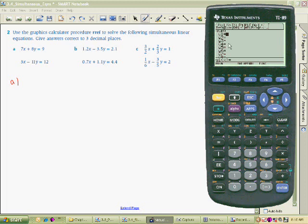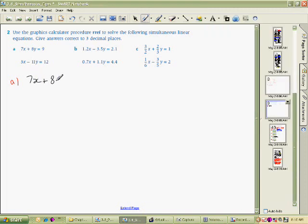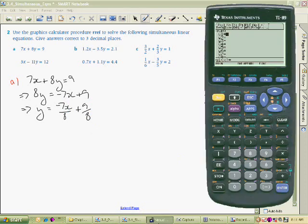When we go to the Y editor we need to first put our equation into the form of Y equals MX plus C. So let's do that now. This one here, 7X plus 8Y equals 9, we need to rearrange that. Taking 7X from both sides we end up with 8Y equals minus 7X plus 9, dividing both sides by 8 we end up with Y equals minus 7/8X plus 9/8, not very nice but since we're using the calculator it doesn't matter.